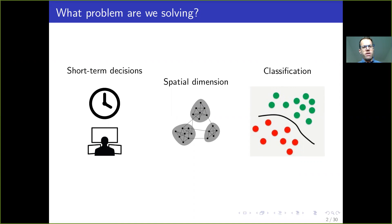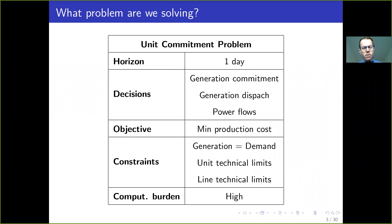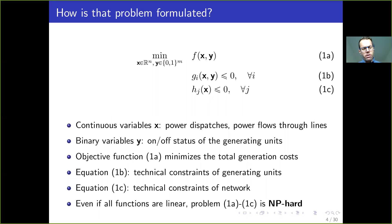There's just a little bit of motivation. We are going to address a short-term decision problem focusing on the spatial dimension, and we are going to use classification techniques. More specifically, we are going to solve the unit commitment problem — a problem with usually a one-day time horizon in which we decide the generation commitment, generation dispatch, and power flows in the network in order to minimize production cost, subject to technical constraints like generation meeting demand and technical limits of units and lines.